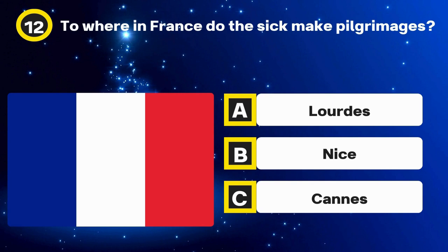Question 17. Which part of the human body has the most bones? Options: Head, Hand, Leg. The answer: Hand.